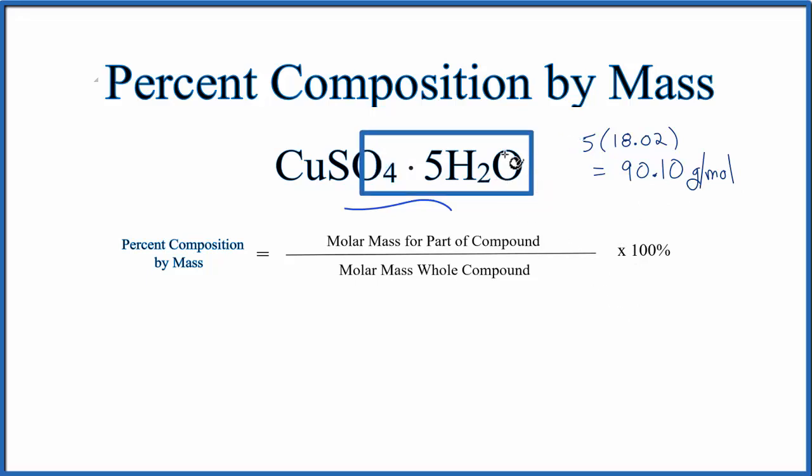To find the molar mass for the entire copper sulfate pentahydrate, we'd find the CuSO4 and then add the 5H2O's to that, and we would get 249.72 grams per mole.